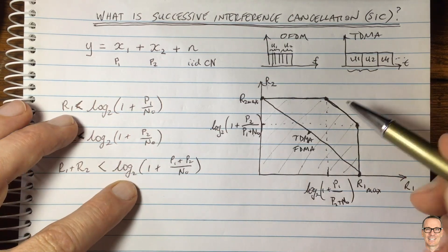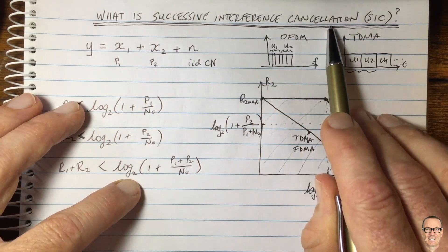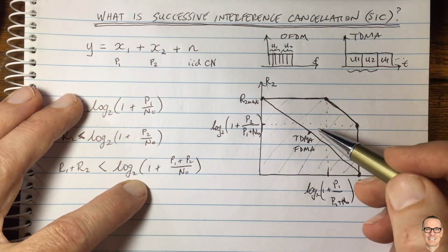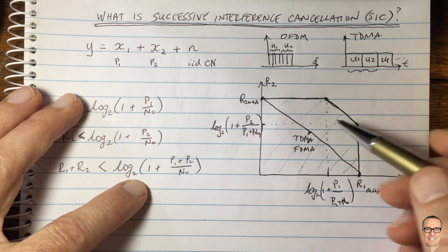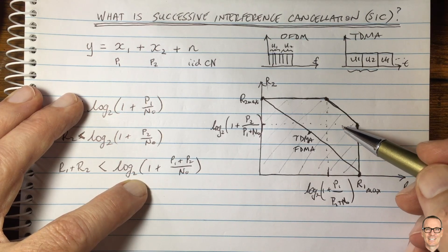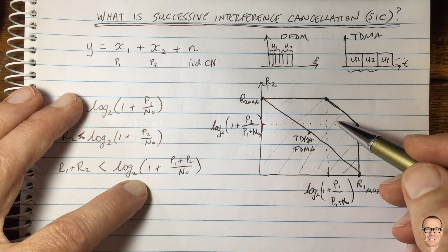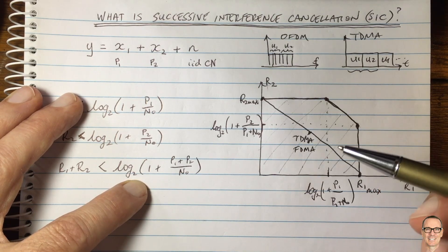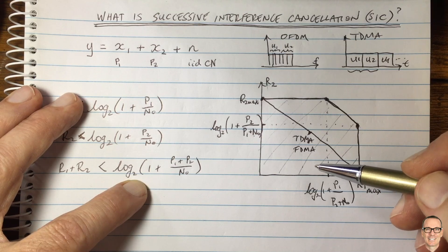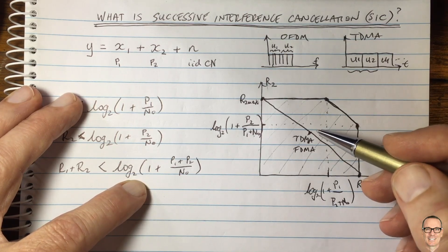Hopefully this video has given you more insights into successive interference cancellation. It is used in 5G NOMA mobile communications. If it has given you those insights, give the video a thumbs up — it helps others find the video. Subscribe to the channel for more videos, and check out the web link in the comments below where you'll find a full categorized list of all the videos on the channel.